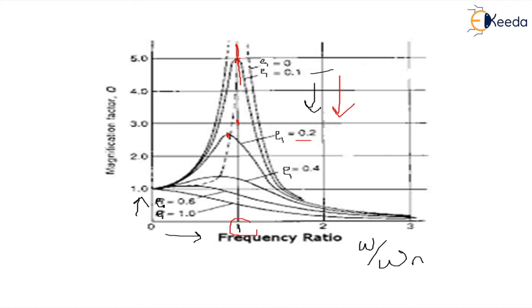But when zeta increases from 0.1 or it starts increasing up to 1, we see that the peak of the magnification factor also starts shifting from this line from the resonance condition.